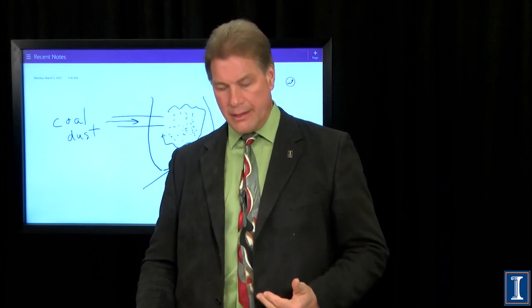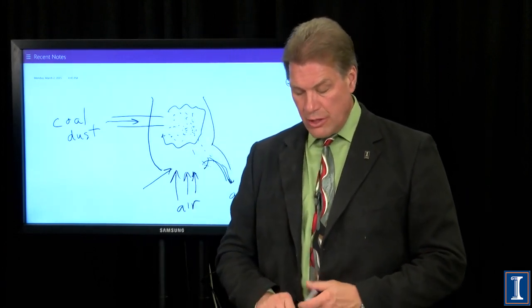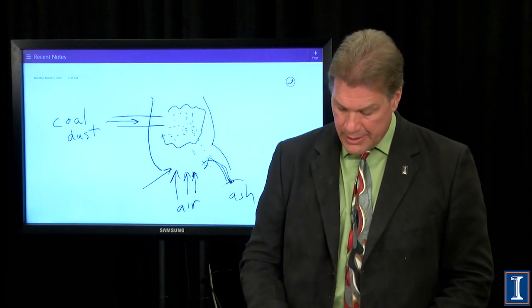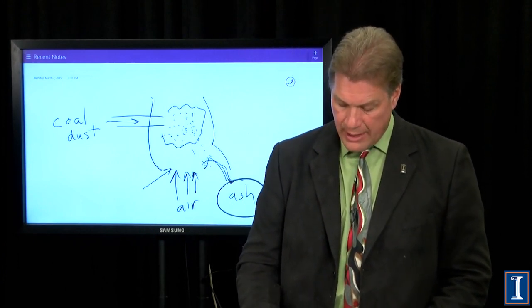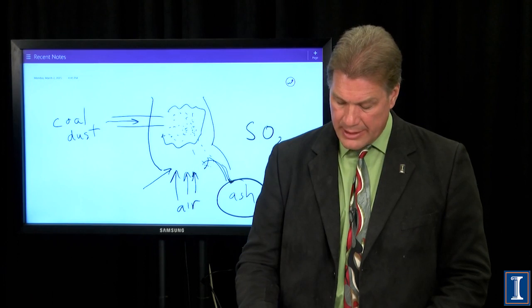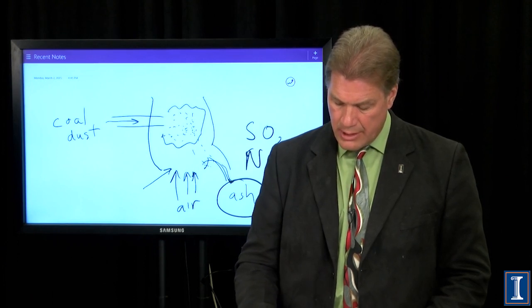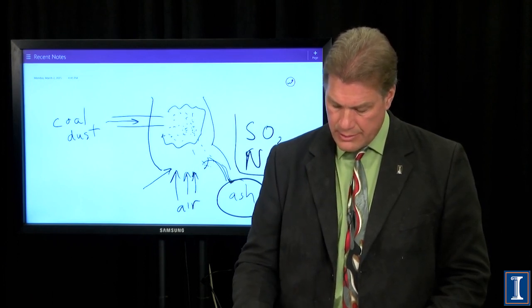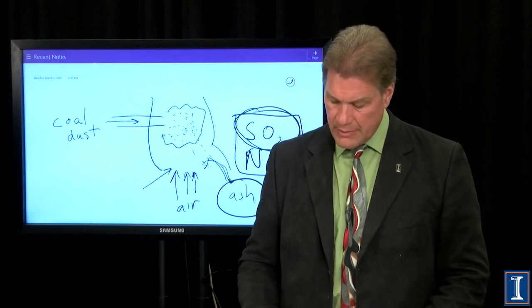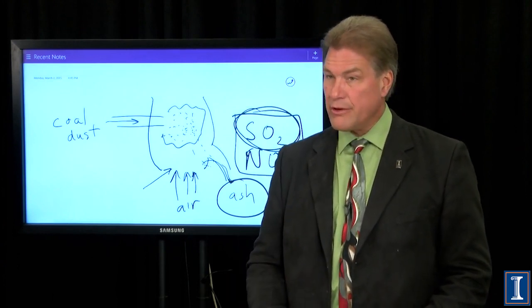The next thing, remember there are two culprits in a power plant: ash and the acid producing gases, SO2 and NOx, particularly the SO2. These are what we want to get rid of.